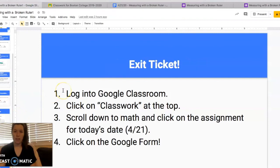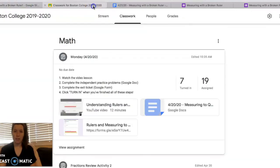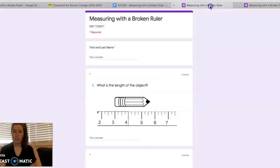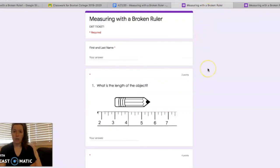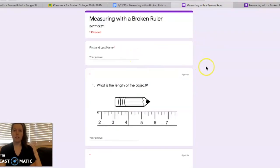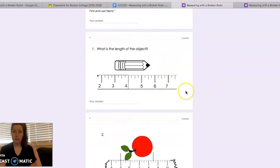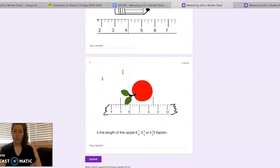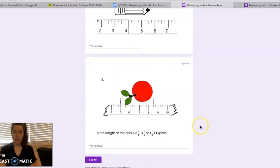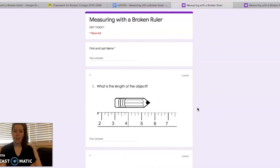To get to the exit ticket, same thing. You're going to log into Google Classroom. And you'll see that the exit ticket is the Google form. So it says forms right here. Then if you click that for today's assignment, it should bring you to a page that looks like this. So you'll type in your name. You'll answer the questions. And you'll click submit. And then it will give you the correct answers and any feedback that I have entered.